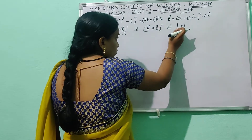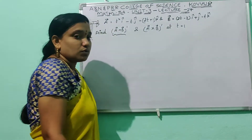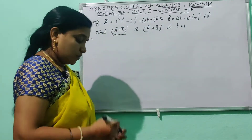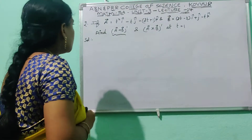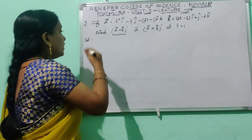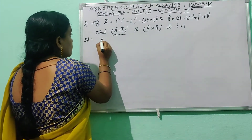To find the result, we substitute t = 1 into the expression after differentiation. First, let's note the values of ā and b̄ that we are asked to work with.